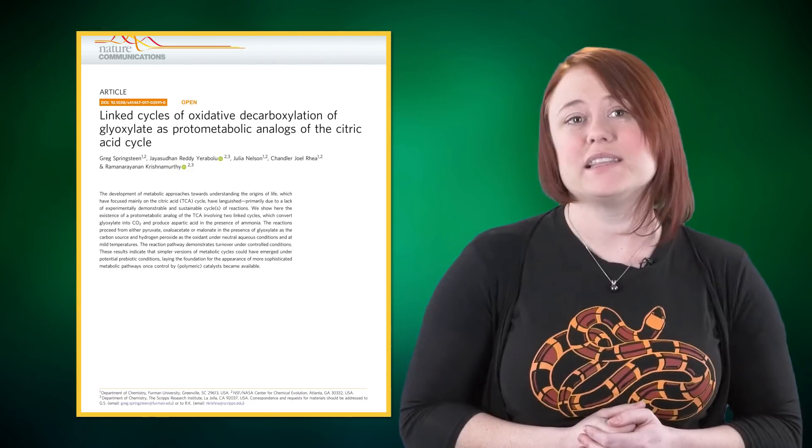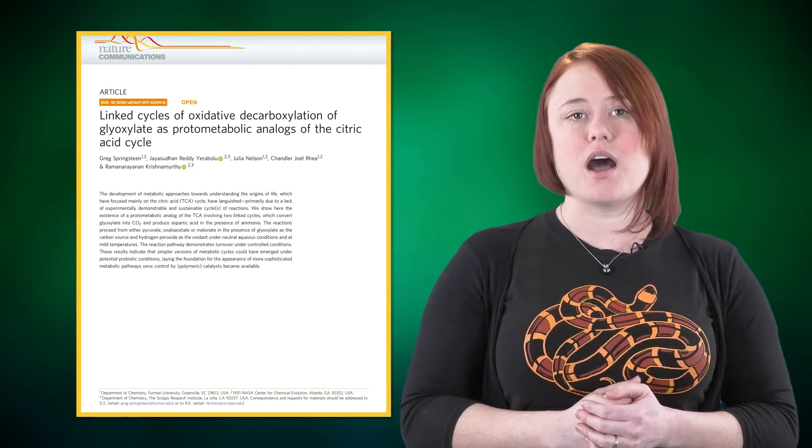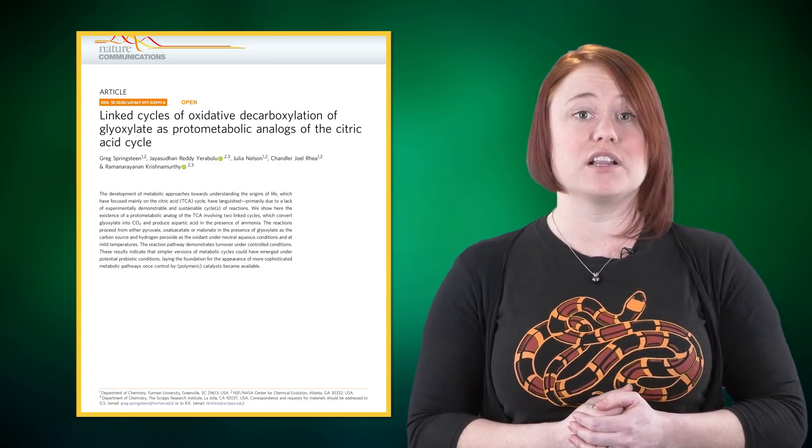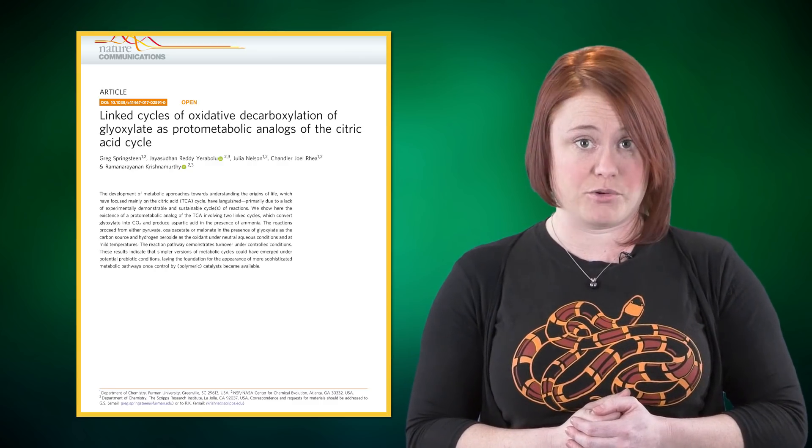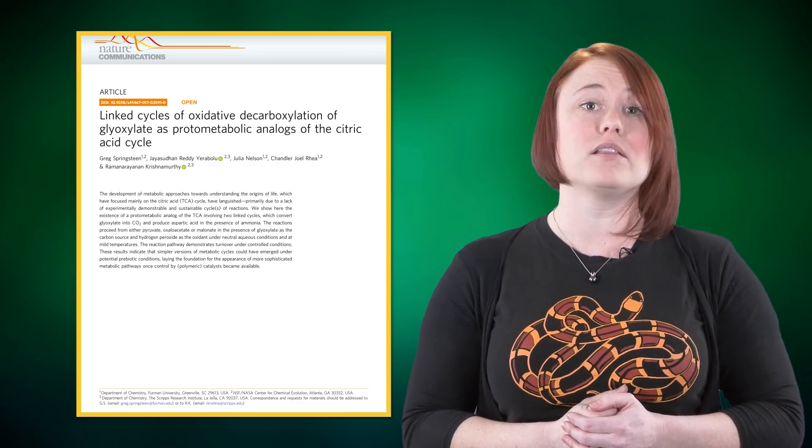For our first Denatured segment, we're going to look at an article published at the start of 2018 in the prestigious journal Nature Communications. The title of the paper is 'Linked Cycles of Oxidative Decarboxylation of Glyoxalate as Protometabolic Analogues of the Citric Acid Cycle.' So yeah, remember when I mentioned jargon? Perfect example. Don't be daunted by the title.